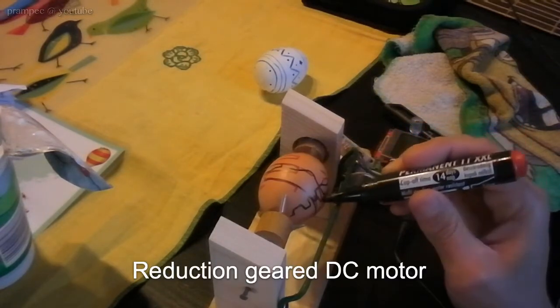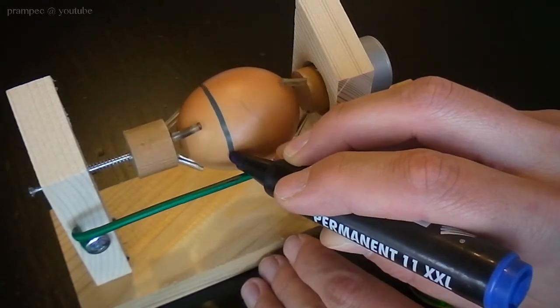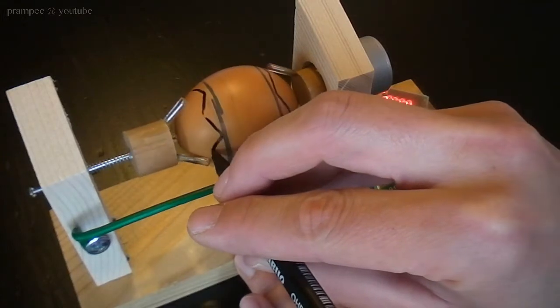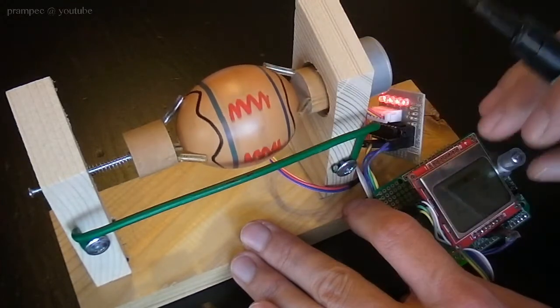If you use a slow RPM DC motor, you already have a tool that helps you holding and rotating the egg. But in my implementation I have used a cheap stepper motor so I can control the exact position of the rotation.